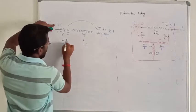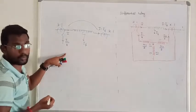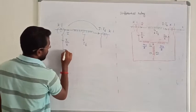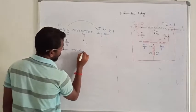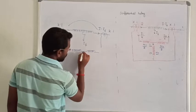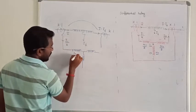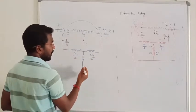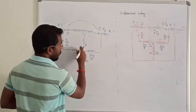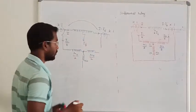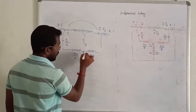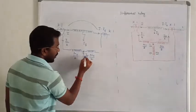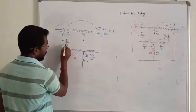The primary current is the input current. I am putting the relay here, I am putting the relay here. This is the restraining coil. The operating coil is E divided by E. I1 by K — let me call it I0. Operating coil is I0. Restraining coil is I1 by K.